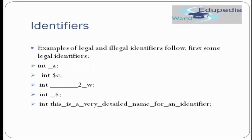Here are examples of legal identifiers. 'int _a' is legal because it starts with an underscore. 'int $c' is legal because it starts with a dollar sign. 'int __w' is legal because it starts with an underscore and can have any combination after. 'int _$' is also perfectly legal. A very long identifier like 'int this_is_a_very_detailed...' is also legal because there is no defined length limit for an identifier name.